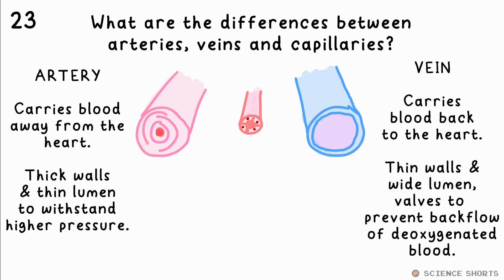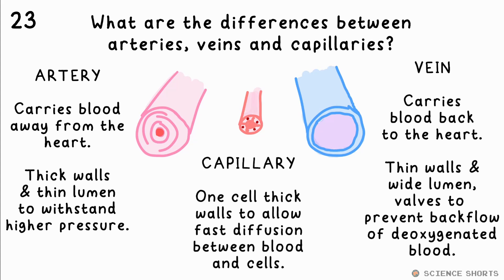Veins have thin walls and a large lumen, and they contain valves to prevent the backflow of deoxygenated blood. Capillaries are very small blood vessels with one-cell-thick walls to facilitate gas and nutrient exchange between the blood and cells.